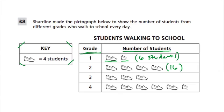In 3rd grade, we have 4, 8, 12 students that walk. And then in 4th grade, we have 4, 8, 12, 16, 20, and then 2 more, so 22 students that walk.